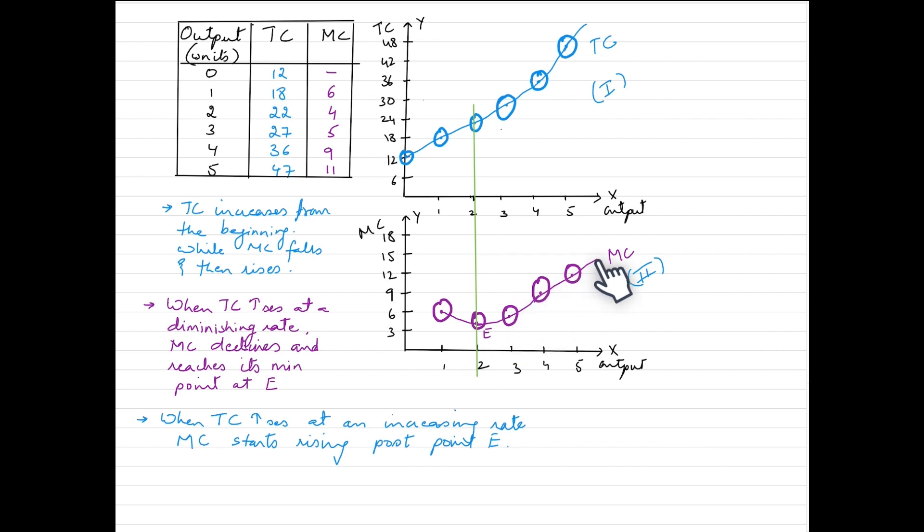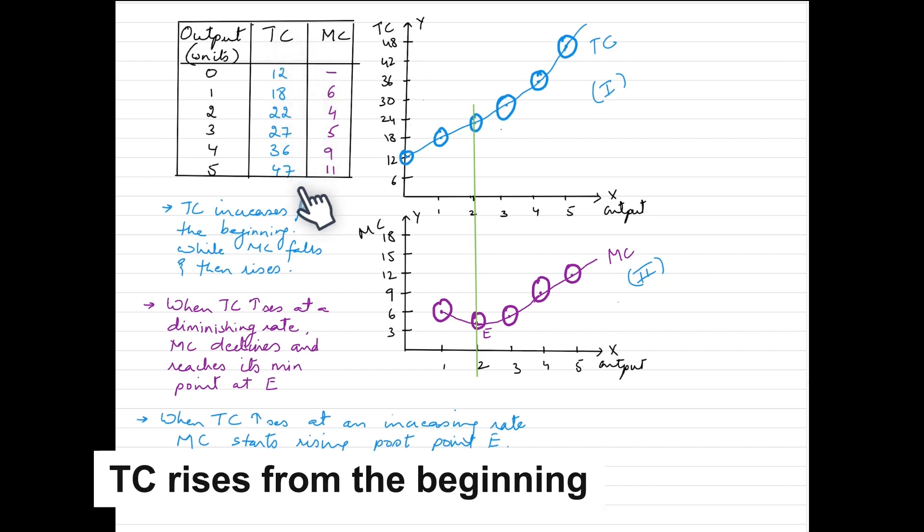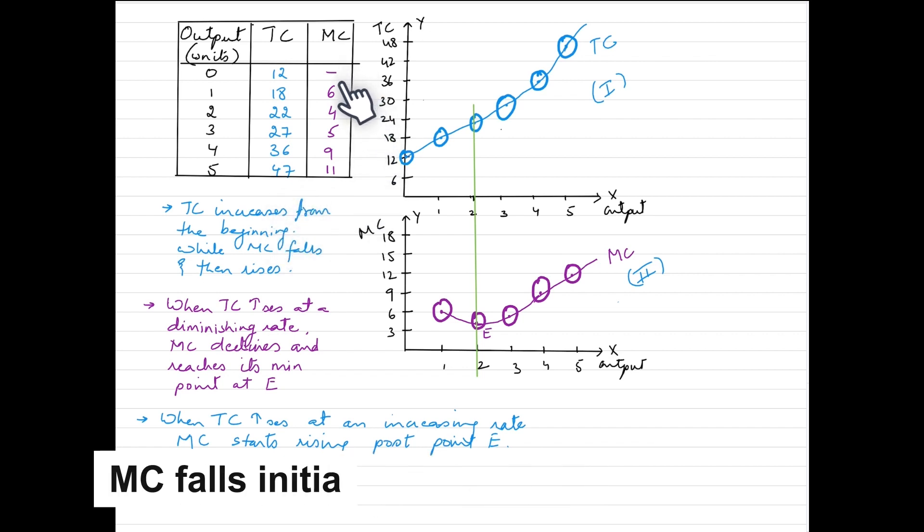The first thing we need to see is that total cost is increasing or rising right from the beginning, whereas marginal cost initially falls and then rises. The same is depicted in the curves.